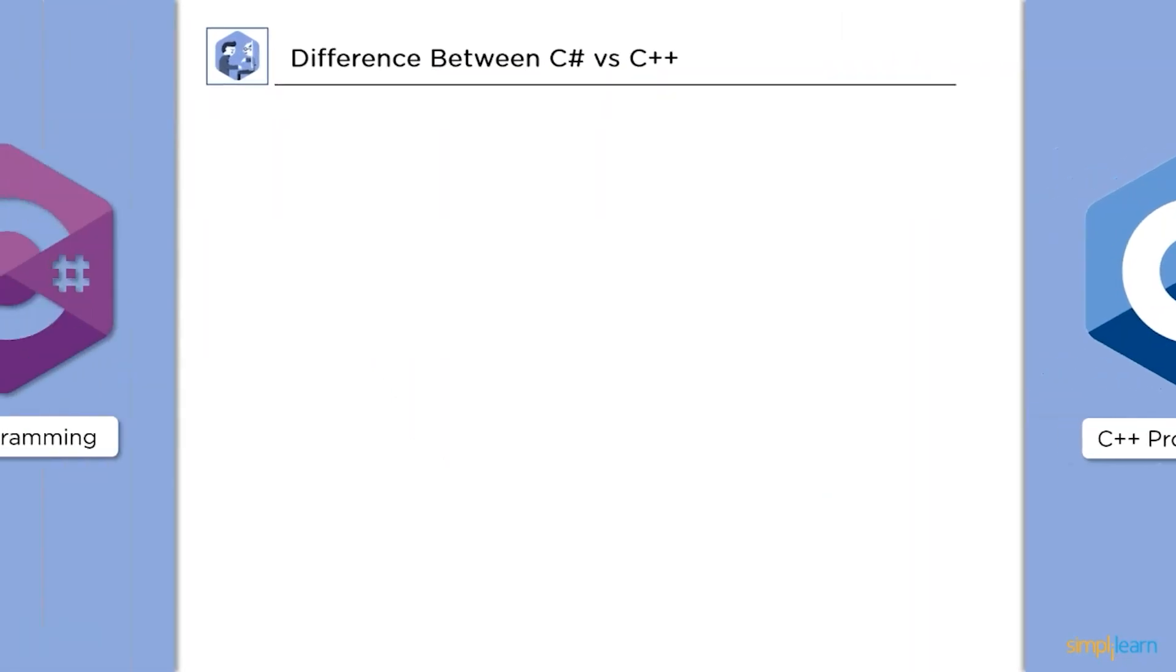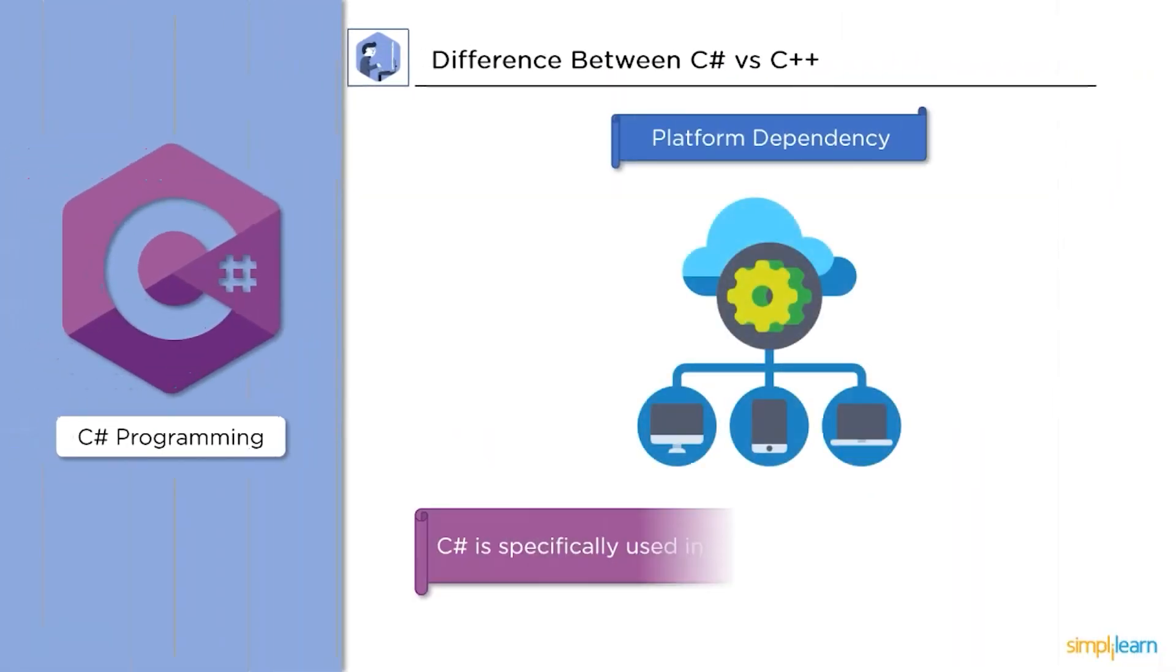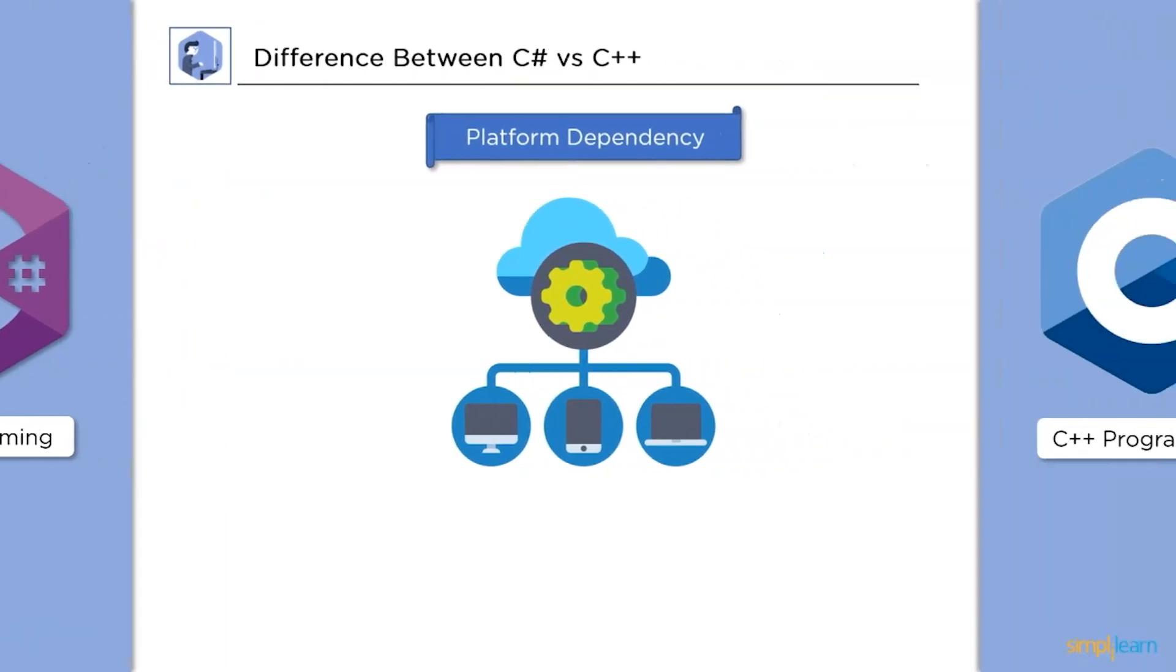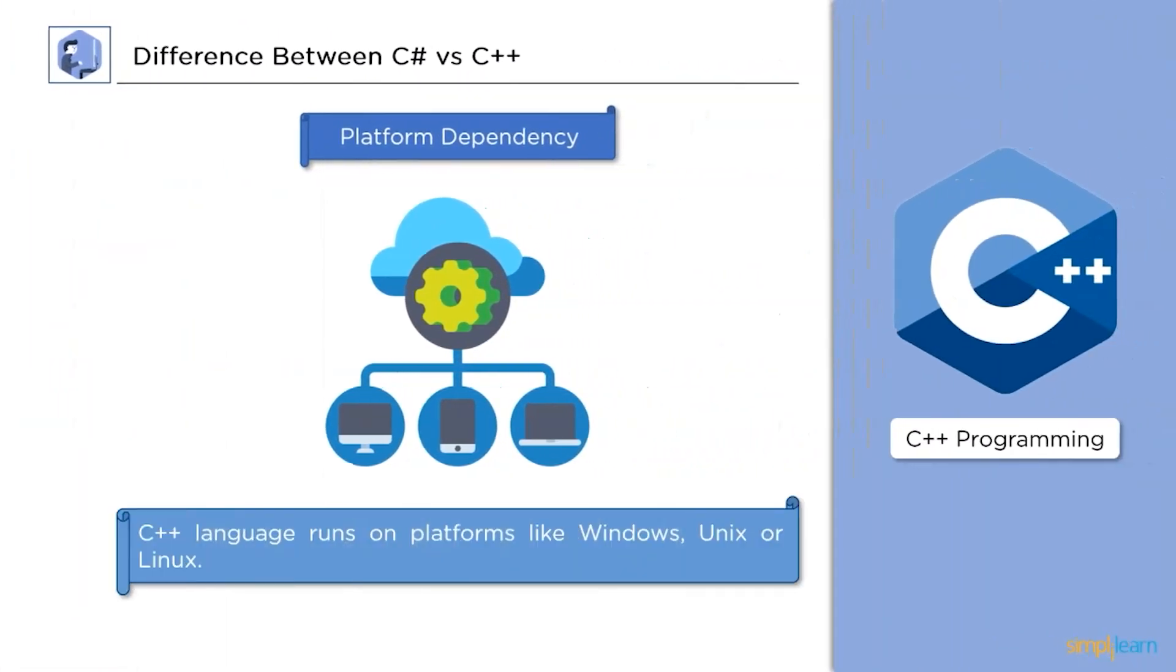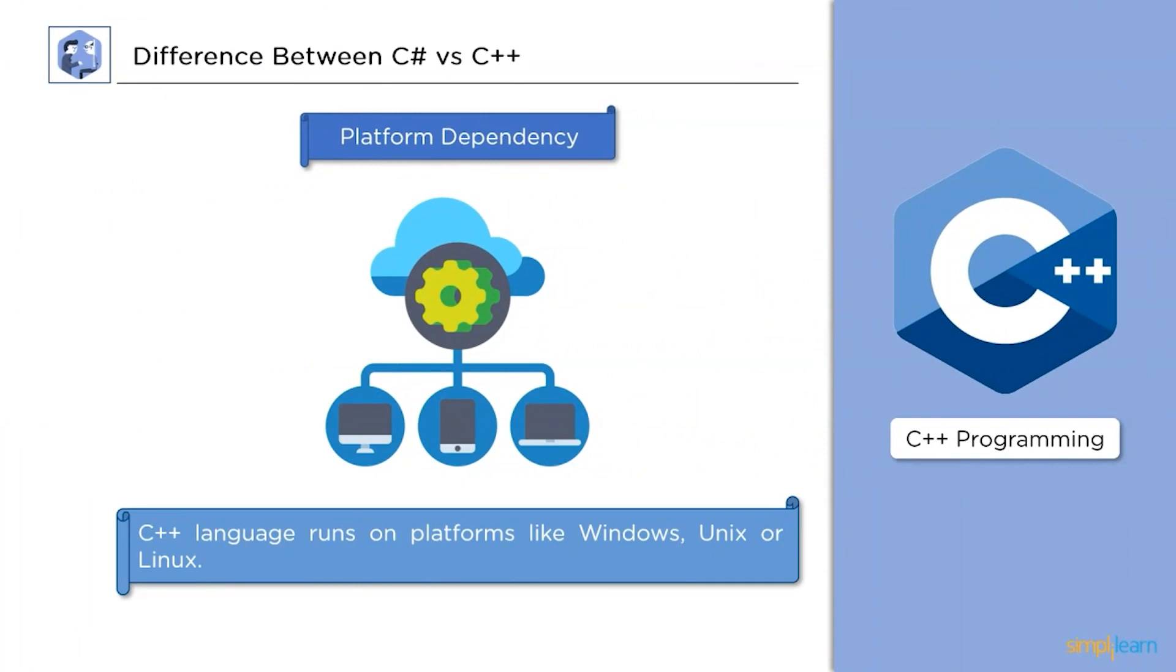Next up, platform dependency. C Sharp code is only compatible with Windows although Microsoft is attempting to make it worldwide. Significant systems do not support C Sharp yet. C++ code is portable and can run on any platform. C++ is also used when a program needs to connect directly with hardware.